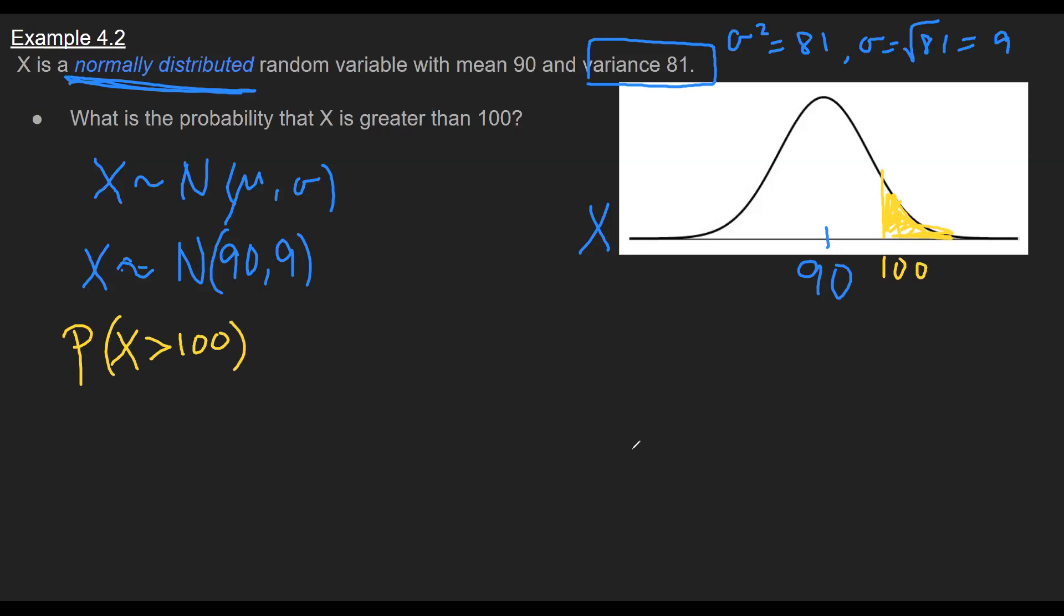Now as we saw earlier, to find probabilities of normal distributions we have to use the standard normal table or the Z table, which means I'm going to have to convert my normal distribution into a standard normal distribution. So this number right here I need to convert it to a Z. And we have a simple relationship that allows me to go backwards and forwards between Z and X, and that relationship looks like this: I take my X value, I subtract the mean, divide by the standard deviation.